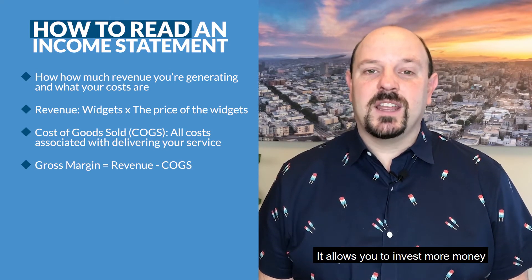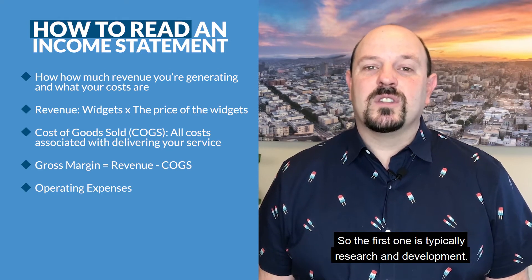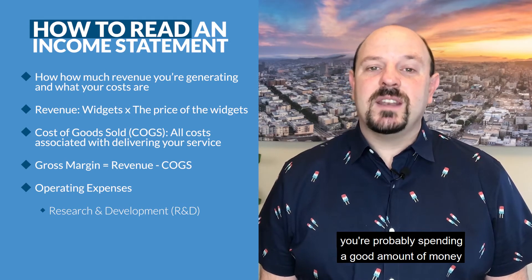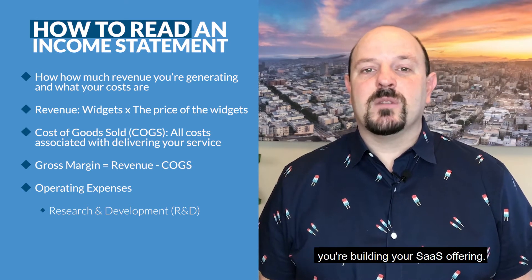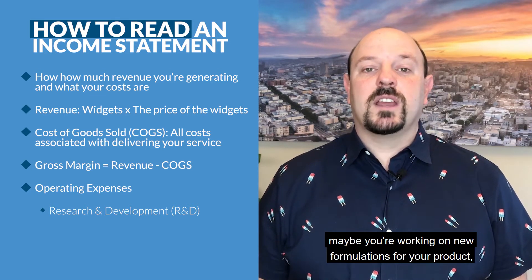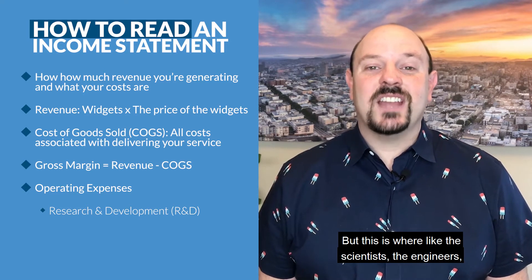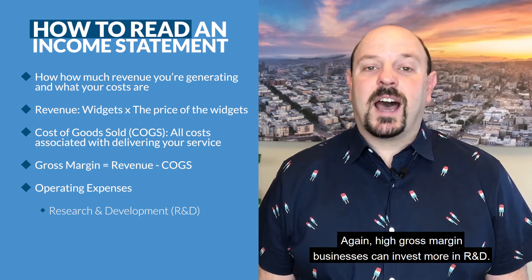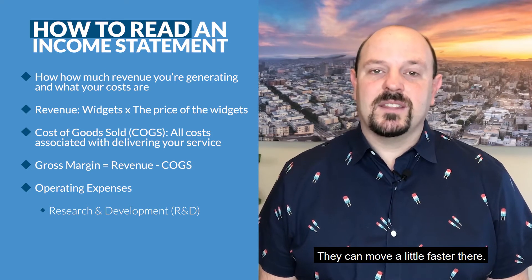High gross margin allows you to invest more money in the next group of expense categories, called operating expenses. The first one is typically research and development. If you're a tech company, you're probably spending a good amount of money on R&D — this covers a lot of product development, like building your SaaS offering. If you're an e-commerce company, maybe you're working on new formulations for your product. This is where the scientists and engineers are going to be captured. High gross margin businesses can invest more in R&D, which is why venture capitalists like it — they can move a little faster.